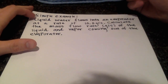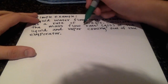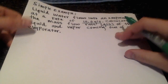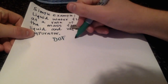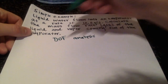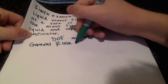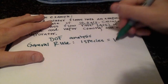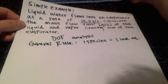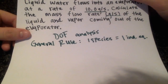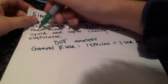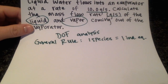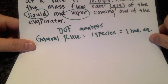Let's look at another simple example. We have liquid water flowing into an evaporator at 10 grams per second, and we want to calculate the mass flow rate of the liquid and vapor coming out. We'll do a degree of freedom analysis, and remember our general rule: there is one species — just water — which means one independent equation. There are two unknowns, so we obviously don't have enough information, but let's write this out to practice.